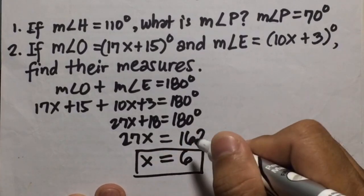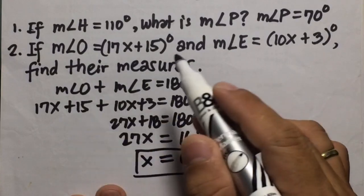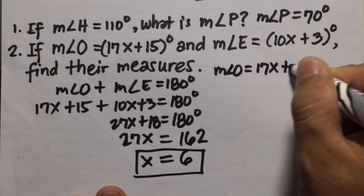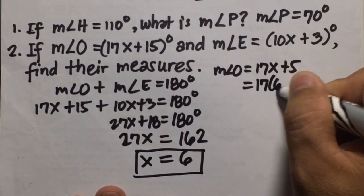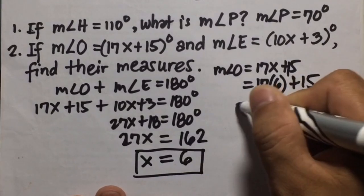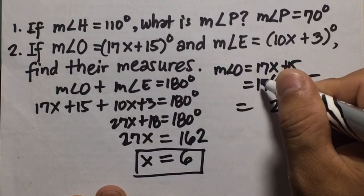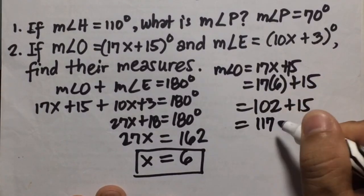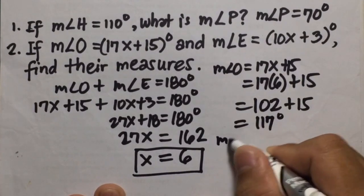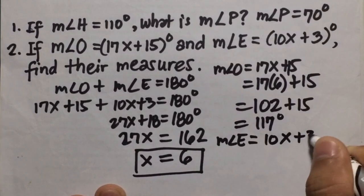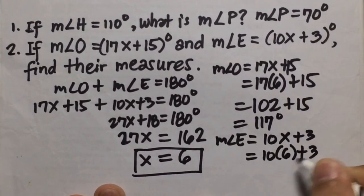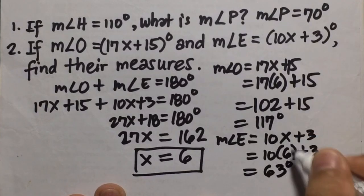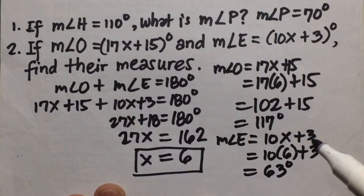With x equal to 6: measure of angle O is 17x plus 15, so 17 times 6 plus 15 equals 102 plus 15 equals 117 degrees. Measure of angle E is 10x plus 3, so 10 times 6 plus 3 equals 60 plus 3 equals 63 degrees. Adding the two gives 117 plus 63 equals 180 degrees, confirming they are supplementary.